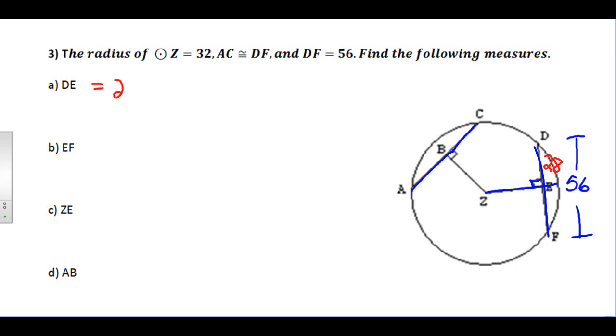Since DE is 28, that's our answer to part A. How big is EF? Well, EF is the same size because ZE was perpendicular to DF, so it bisected it. It's also 28.